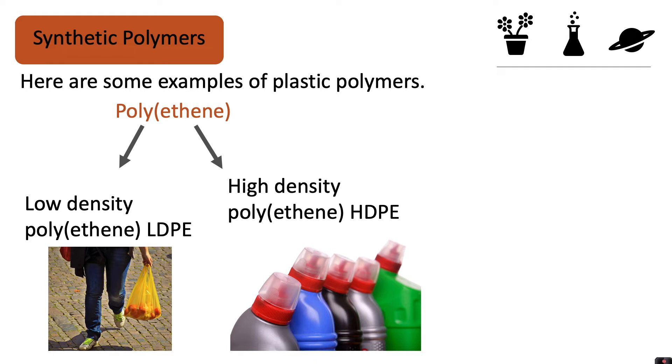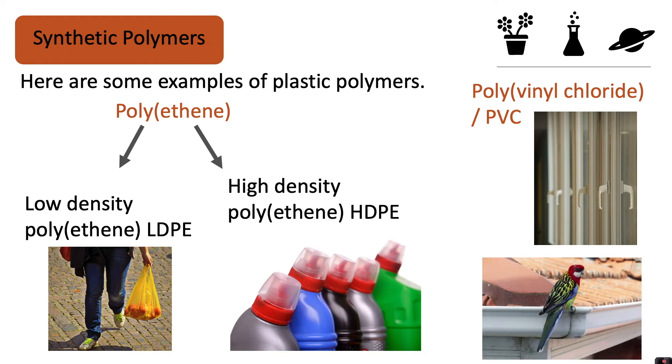Another example of a plastic polymer which is man-made is polyvinyl chloride, otherwise known as PVC, and that is used to make things such as window frames and guttering.